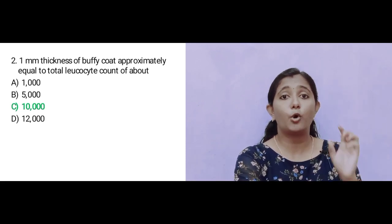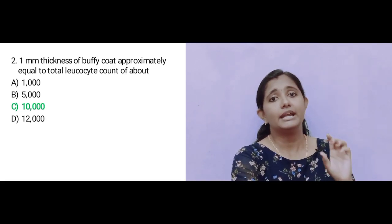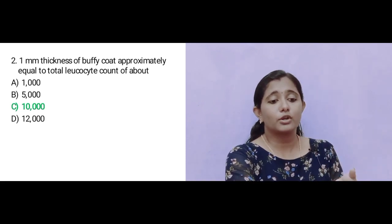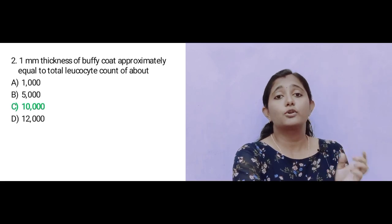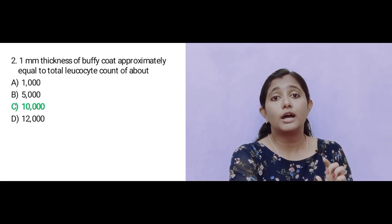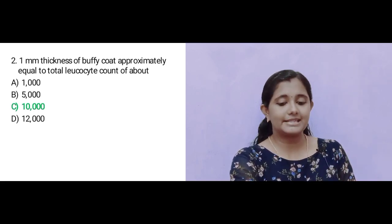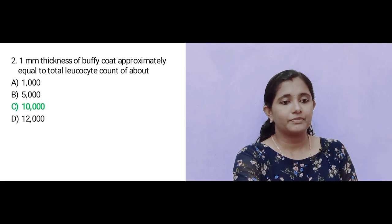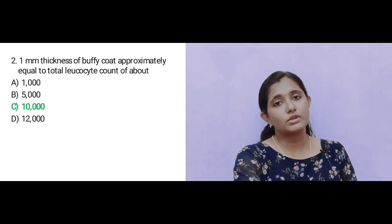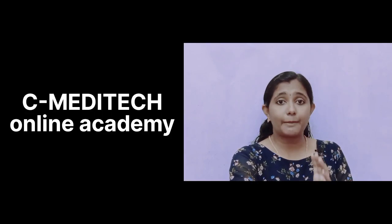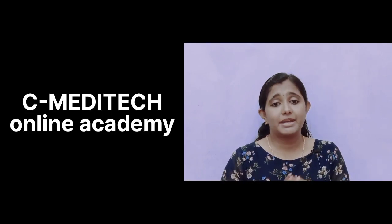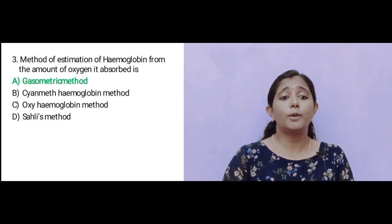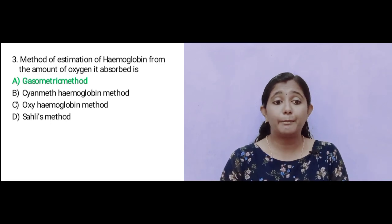Additionally, 0.1 mm of Buffy coat equals approximately 2,000 WBC per microliter.